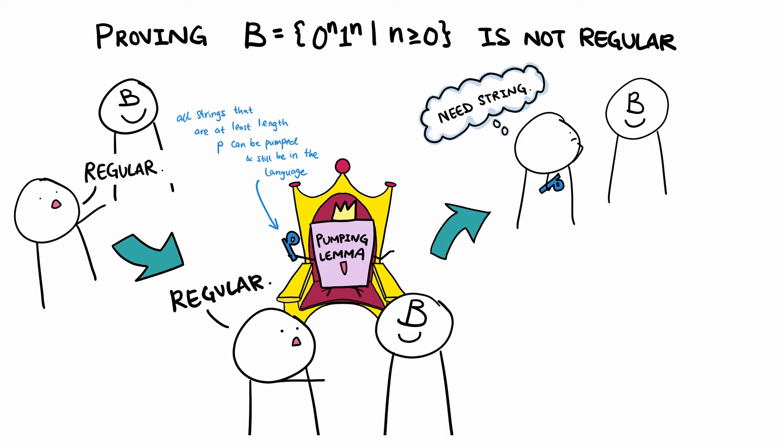So, for our example 0 to the n, 1 to the n, this string 0 to the p, 1 to the p is indeed at least as long as p, but cannot in fact be pumped.